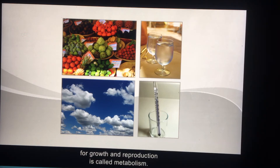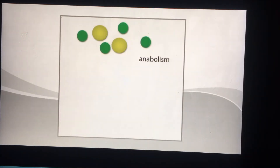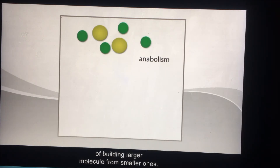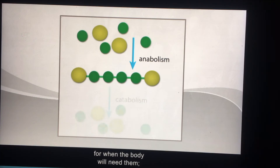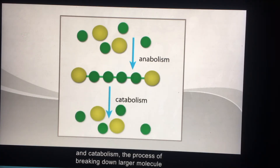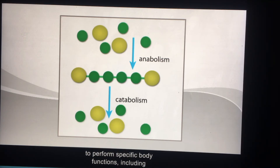The chemical process in which cells receive nutrients for growth and reproduction is called metabolism. There are two phases of metabolism. The first is anabolism, the process of building larger molecules from smaller ones, in which cells store water, food, and oxygen. The second is catabolism, the process of breaking down larger molecules into smaller ones to perform specific body functions, including muscular movements and digestion.